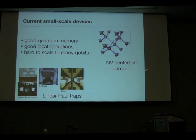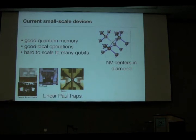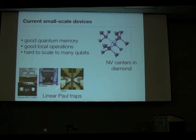Another system near to my heart is nitrogen vacancy centers in diamond. This is a color center embedded in a diamond crystal with extremely good coherence properties. We've possibly been able to demonstrate memory times for nuclear spins in this type of system exceeding hundreds of milliseconds. Both of these systems have nice properties for quantum memory and local control, but it's very difficult to see how to scale them to many qubits.